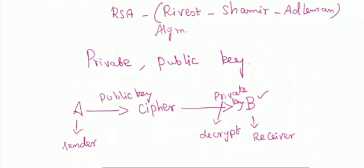In the case of RSA algorithm, they are going to use two keys. One key is the private key and another one is the public key. The private key is known only to the receiver end, but the public key is known to both ends. Today we discussed encryption technology with two types: symmetric key encryption and asymmetric or public key encryption.